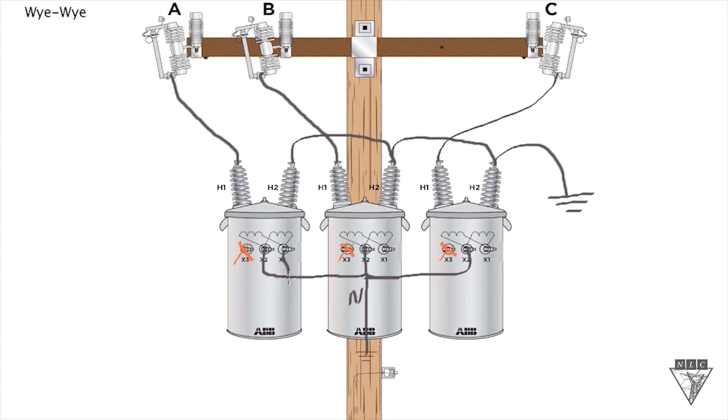Now you're just simply going to run one leg down for each transformer off the X1. And these are going to be your hot legs that are actually going to have the voltage, since they're each hot legs.